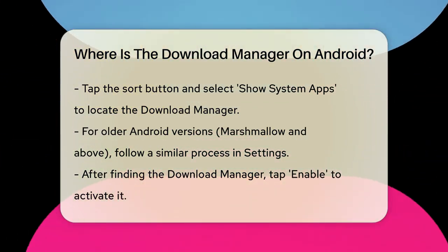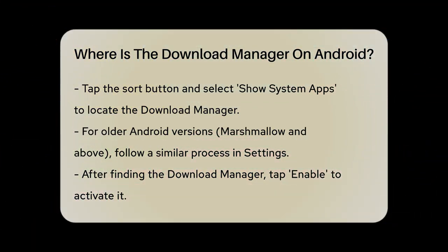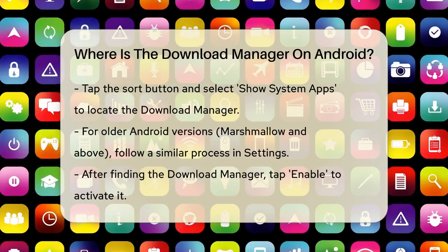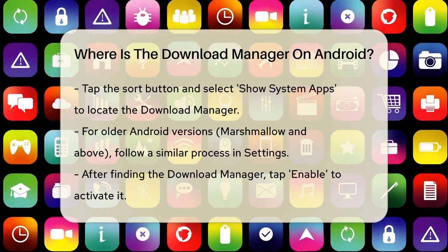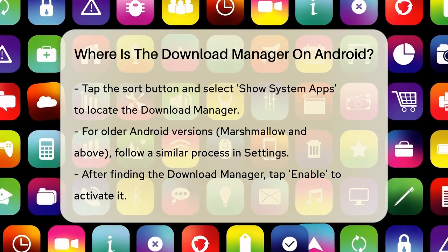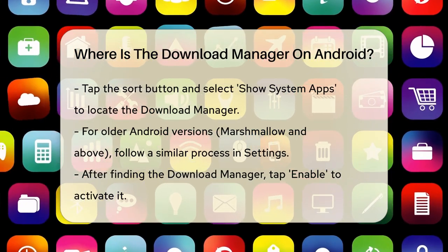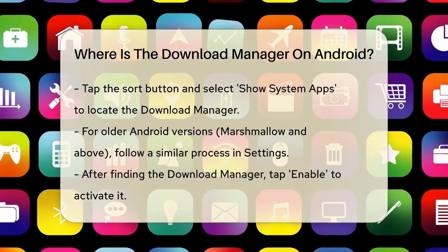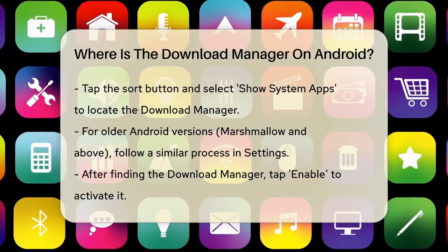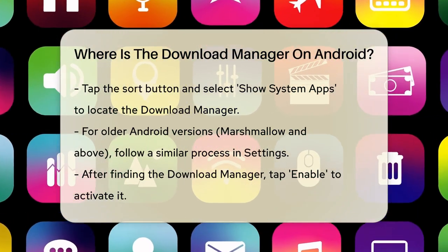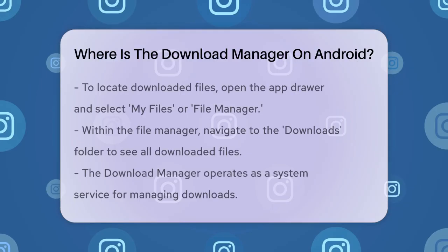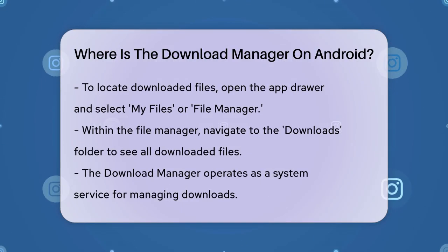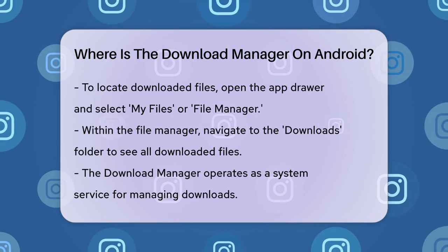For older Android versions like Marshmallow and above, open your settings, tap on Apps, then tap the three dots on the top right corner. Select Show System Apps, search for Download Manager, and tap on Enable.